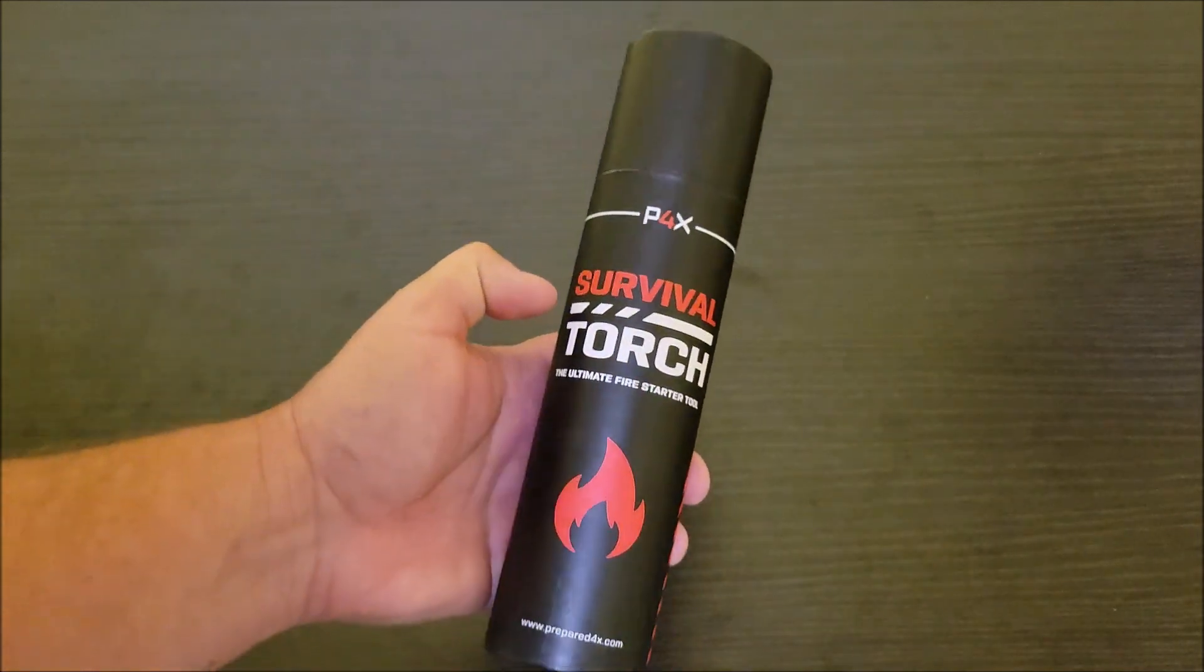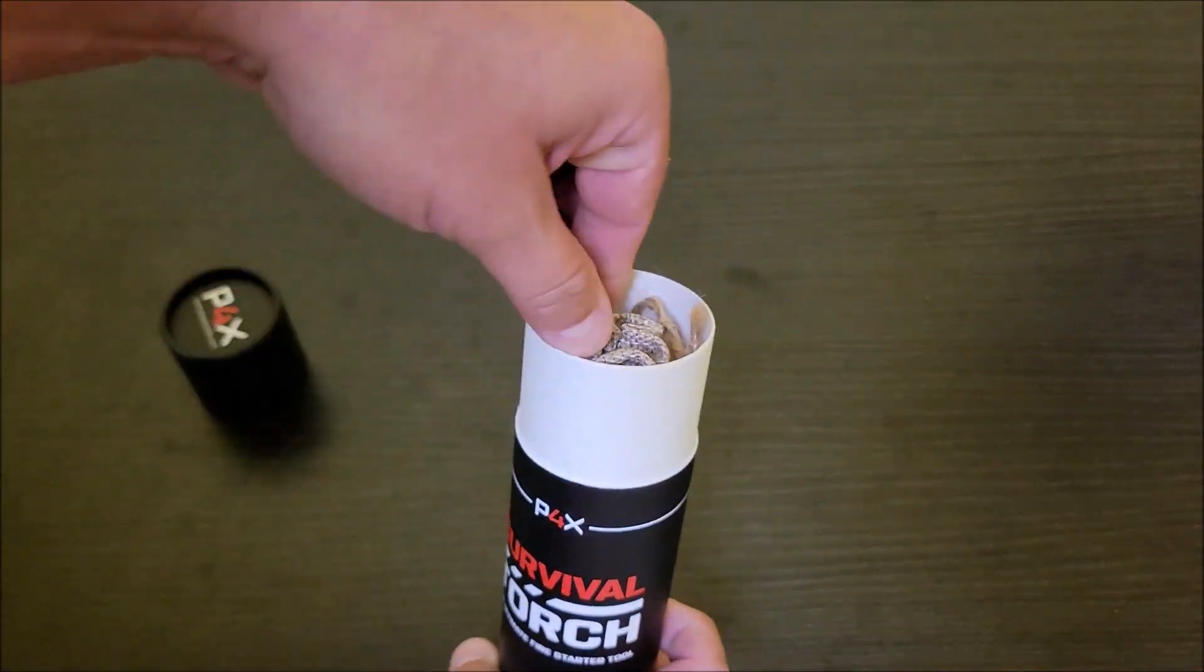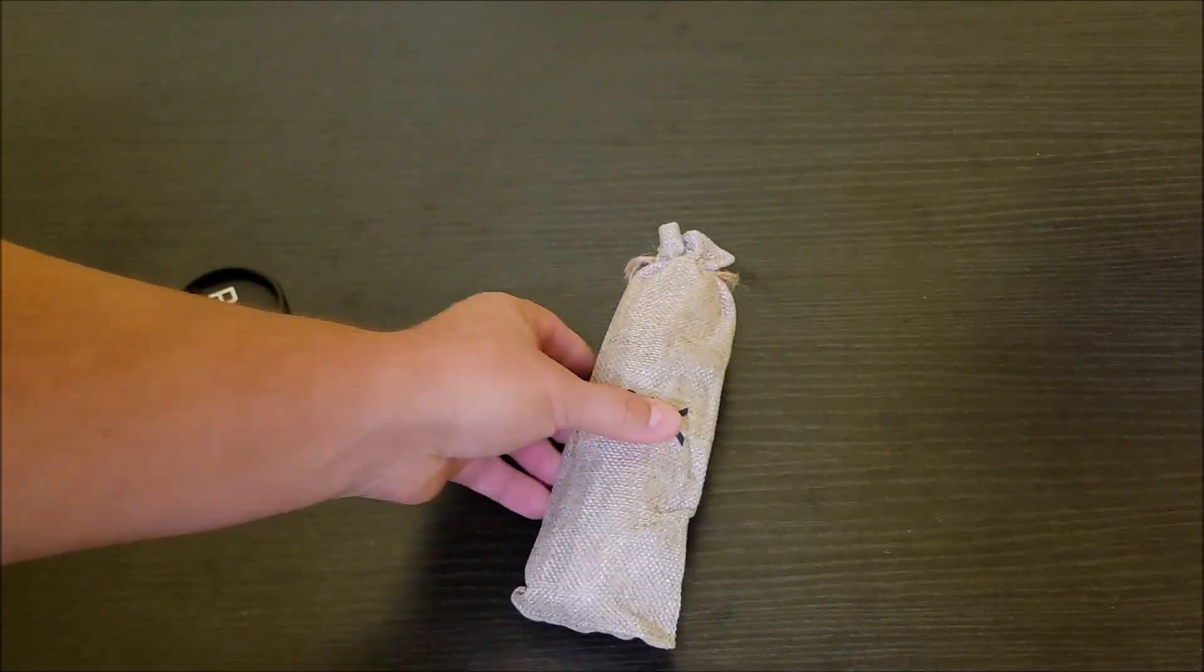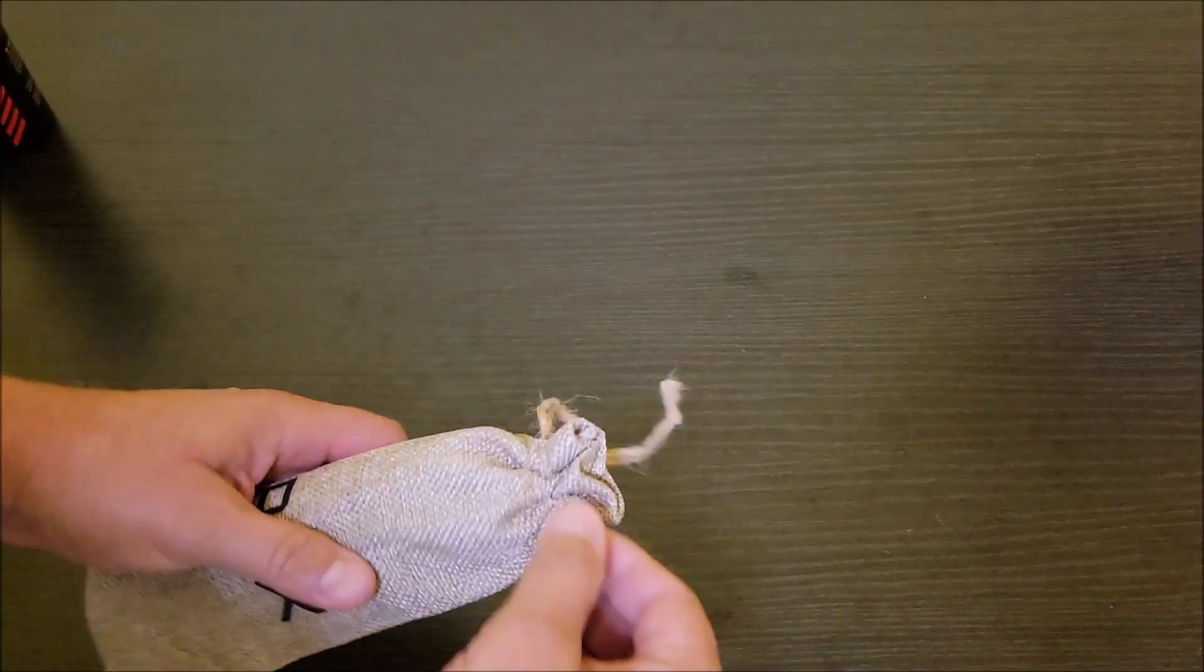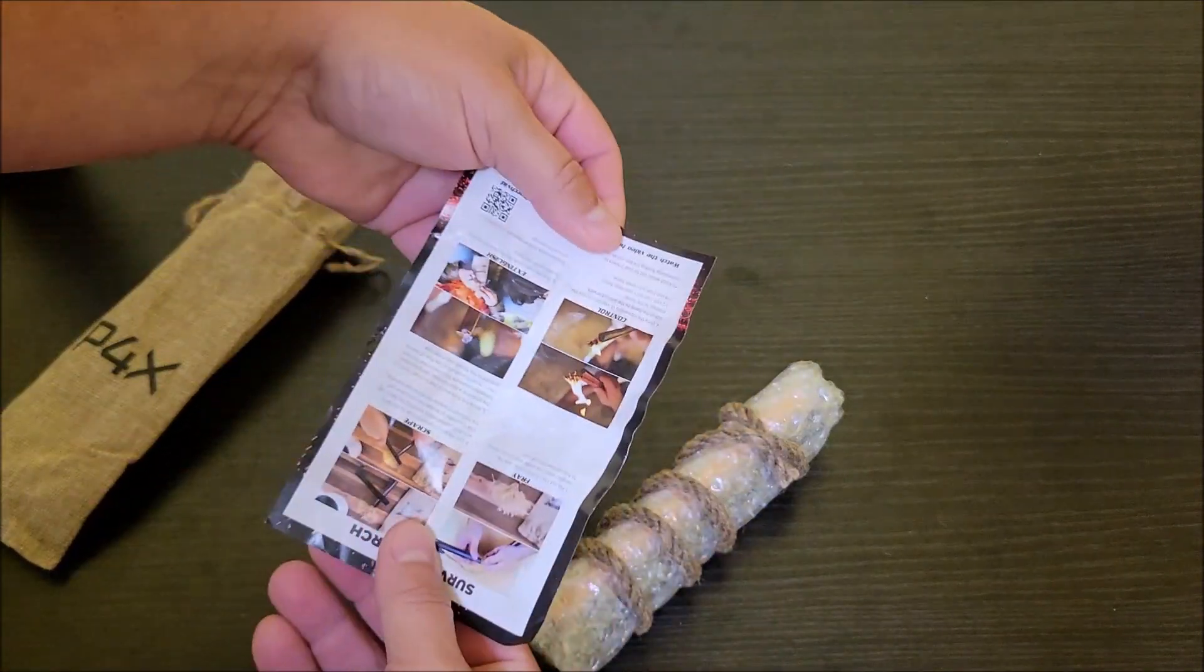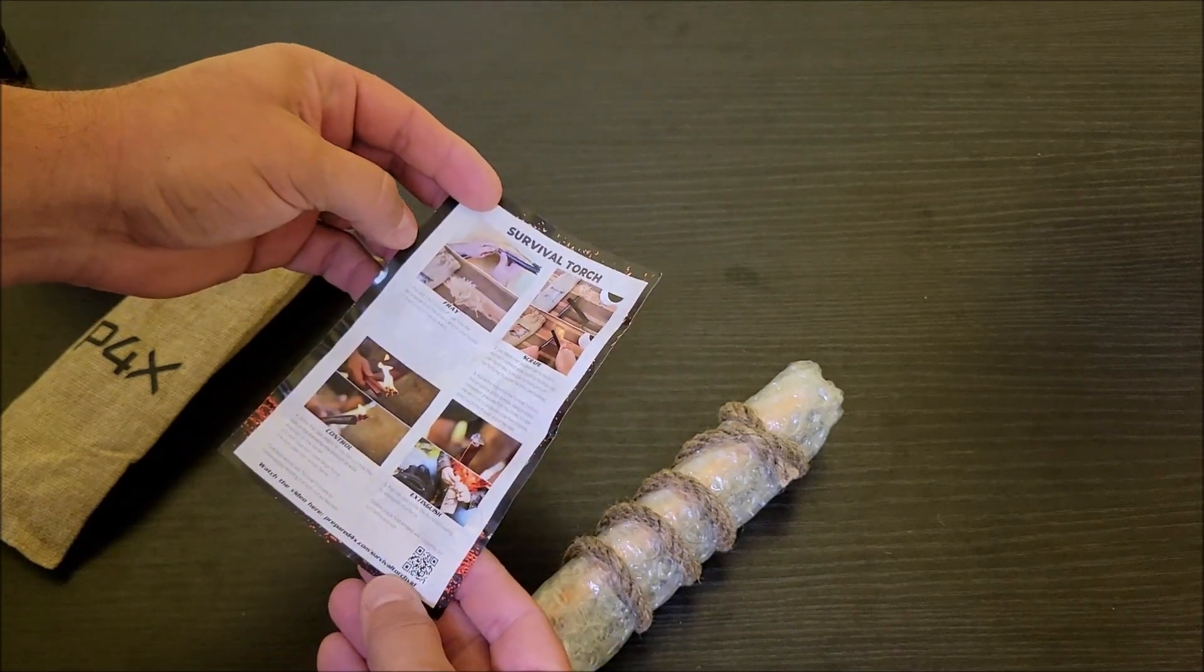This is a survival torch, so let's go ahead and take it out of the box and see what this thing comes with. It comes in this nice little burlap bag, then when you open the bag you get a little instruction sheet on how to do it. Survival torch, four steps, pretty simple.